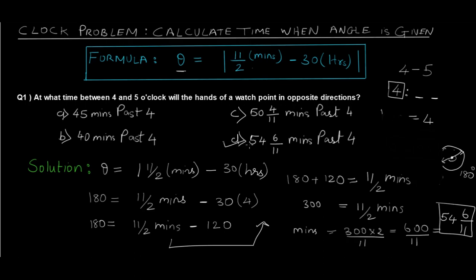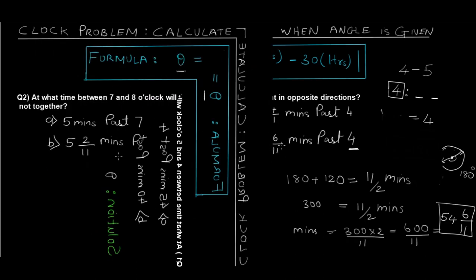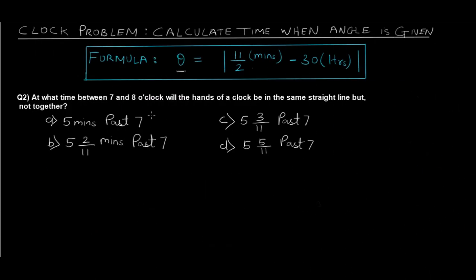So the final answer is 54 6/11 minutes past 4, which is option D. We already knew the hour was 4, and the minutes we calculated are 54 6/11. Now that you know how to solve this type of problem, let's look at another example.